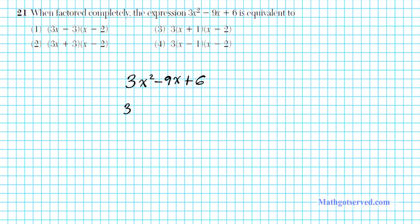Let me make it obvious — we have 3 times x squared minus 3 times 3 times x plus 2 times 3. So you notice that we have a common factor, a greatest common factor namely 3 that must be extracted. Note the problem says when factored completely, so we can't leave any common factors in any of the quantities. So let's go ahead and pull out that greatest common factor which is 3.